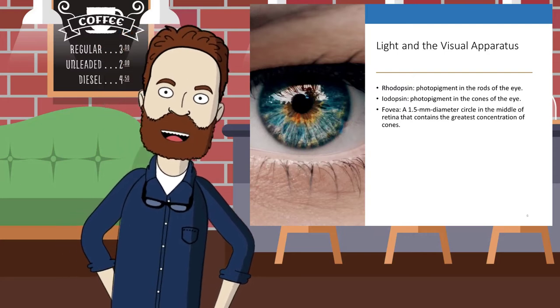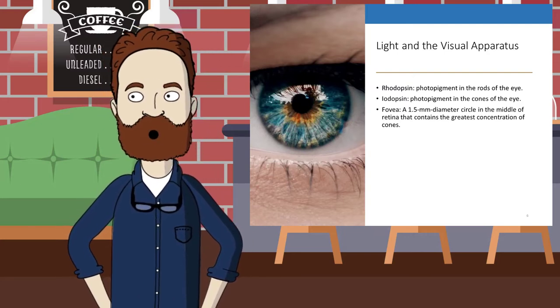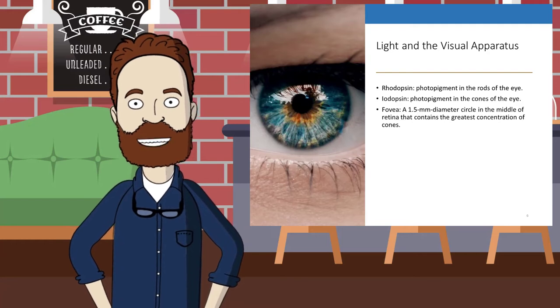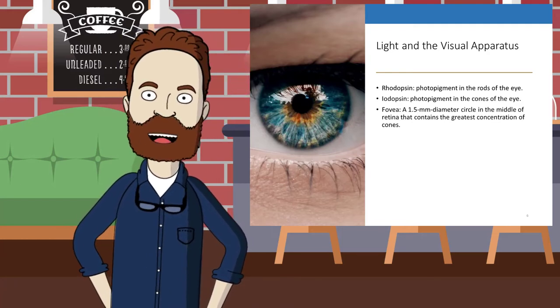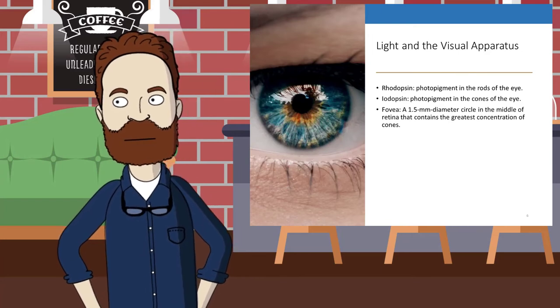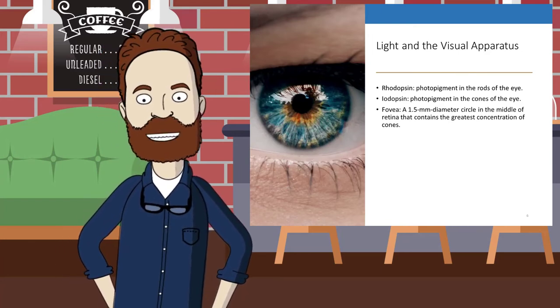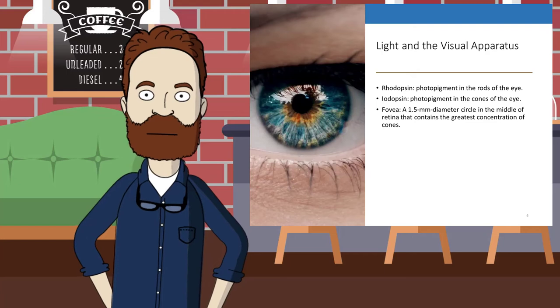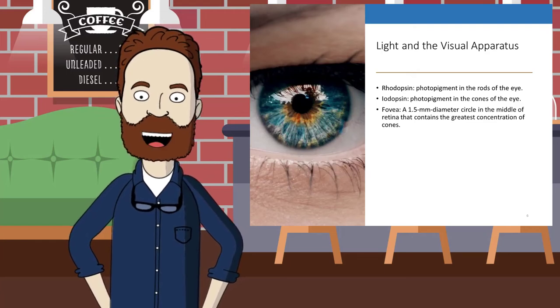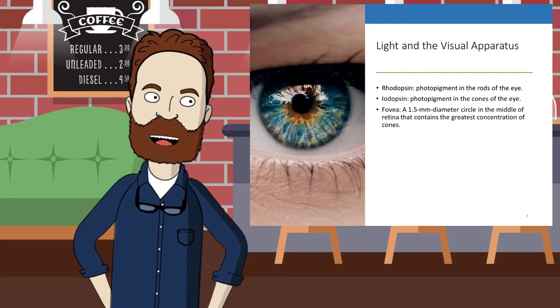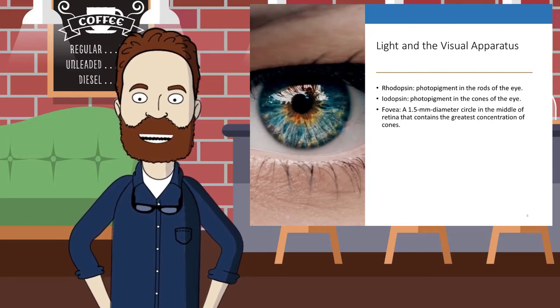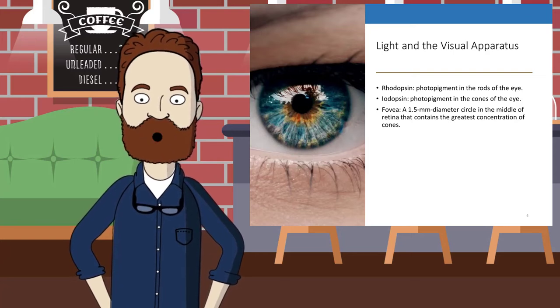The fovea, a 1.5 millimeter diameter circle in the middle of the retina, contains the greatest concentration of cones. Cones drop off rapidly as the distance from the fovea increases. Rods are most concentrated about 20 degrees from the fovea, decreasing in number in all directions and reaching zero in the fovea itself.